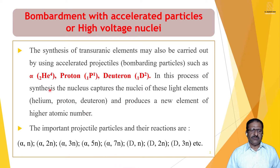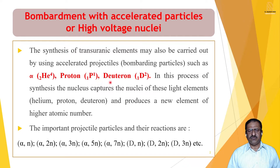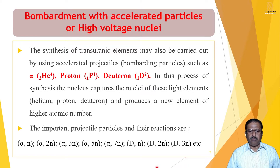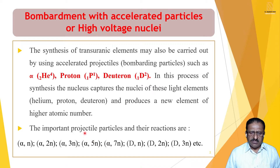Alpha particle is equivalent to helium: charge 2, mass 4. Proton: charge 1, mass 1. Deuteron: charge 1, mass 2. In this process, the nucleus captures the nuclei of these light elements — helium, proton, deuteron — and produces a new element of higher atomic number. In reactions, generally alpha particles are bombarded and neutrons are given out; the number of neutrons may be 1, 2, 3, 4, 5 or more.